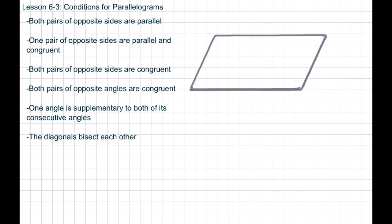So if you have a typical question, it might say something like, given the information, prove or show that this is a parallelogram. The first one says both pairs of opposite sides are parallel. This is just the definition — the definition of a parallelogram — that just tells us what it is.